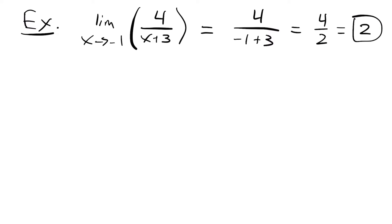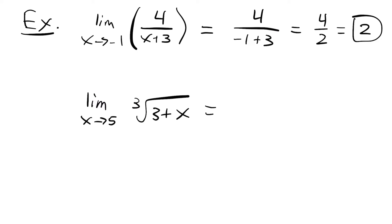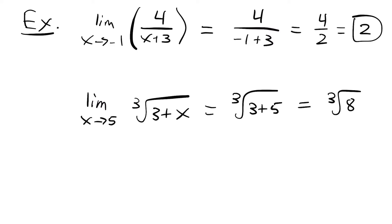Then we'll look at the limit as x approaches 5 of the cubed root of 3 plus x. Plugging in 5, we have the cubed root of 3 plus 5, which is the cubed root of 8. The cubed root of 8 is 2, because 2 times 2 times 2 equals 8.